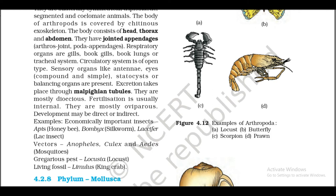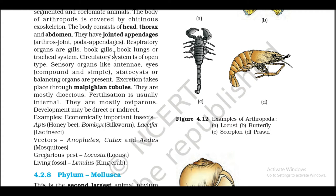Respiratory organs are gills, book gills, book lungs, or tracheal system. Circulatory system is open type. Sensory organs like antennae and compound eyes are present. Statocysts or balancing organs are present. Excretion takes place through Malpighian tubules. They are mostly dioecious. Fertilization is usually internal. They are mostly oviparous. Development may be direct or indirect.